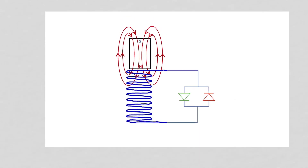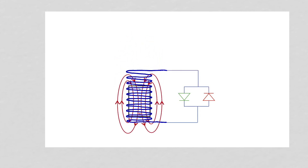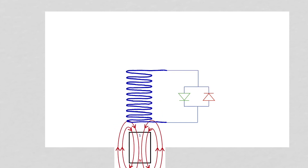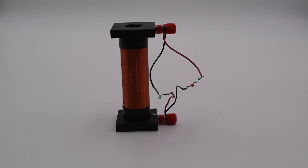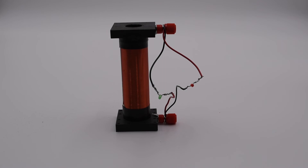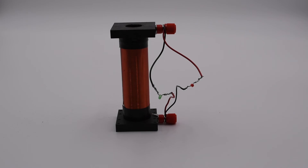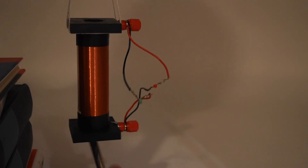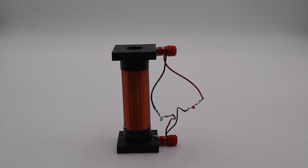Let's go back to the situation where we had a stationary coil and dropped the magnet through it. The direction of current flow can be determined by which LED turns on. If the current is flowing out the top of the coil, the green LED is forward biased and turns on; if the current is flowing out the bottom of the coil, the red LED will be forward biased and turn on. As the magnet fell into the coil, the green LED turned on; as the magnet fell out of the coil, the red LED turned on.